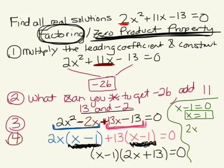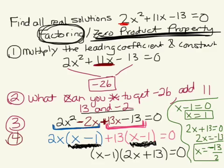We take the second factor, 2x plus 13 equals 0. And we need to solve for x. So the opposite of adding 13, we're going to subtract 13 on both sides. The opposite of multiplying by 2, we're going to divide by 2 on both sides. And these are the same exact answers we received with the quadratic formula.